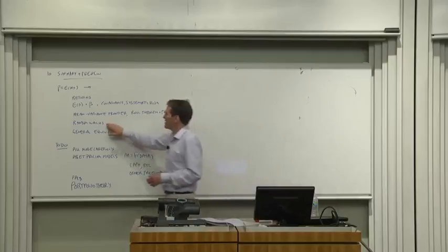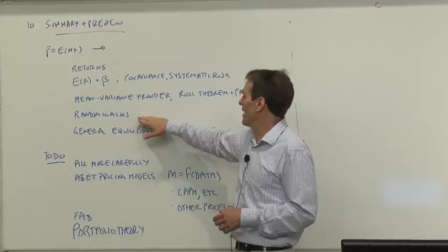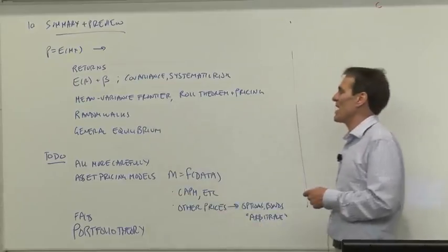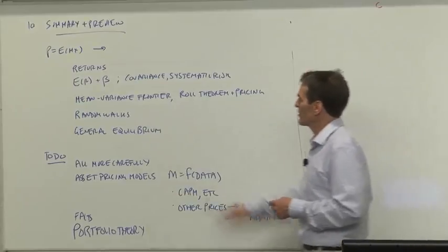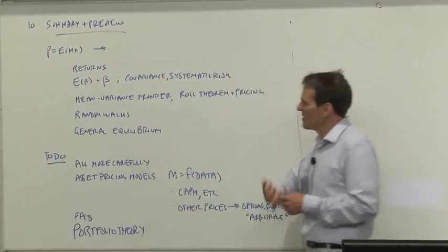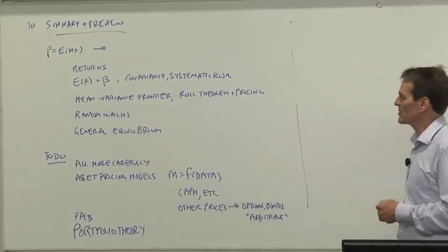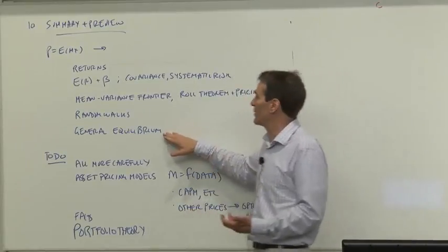We talked about random walks and martingales and market efficiency and the time series behavior of returns, and we also learned about the possibility of slow time varying expected returns. And we closed up with thinking about general equilibrium.